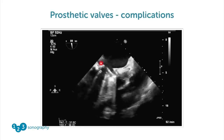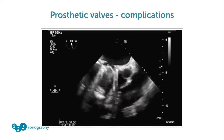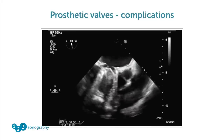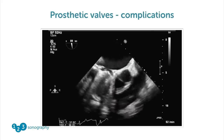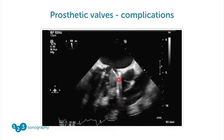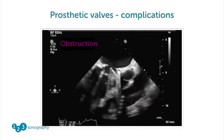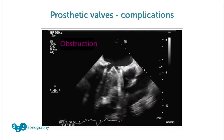We'll talk about that in more detail when we come to TEE. But at this point you can see that one of the leaflets is stuck — this is prosthetic valve obstruction.